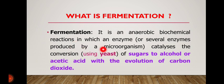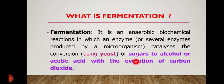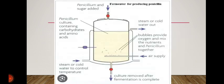What is fermentation? Fermentation is an anaerobic biochemical process in which an enzyme, generally yeast, helps to convert sugar to alcohol or acetic acid, and here carbon dioxide is generated. By application of this fermentation process, penicillin is prepared.